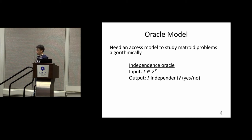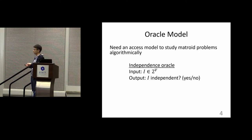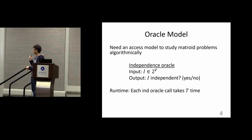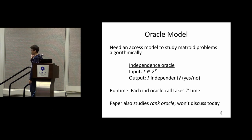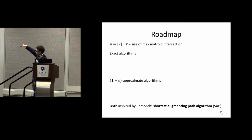In general, matroids are abstract objects without any explicit representation, so to study matroid problems computationally you need a model to interact with the matroid. The most standard and natural model is the independence oracle: given a set, the oracle tells you whether it is independent or not. We denote the running time of such an oracle by T. We denote the size of the ground set by N and R is the size of the final solution, i.e., the size of the maximum matroid intersection.